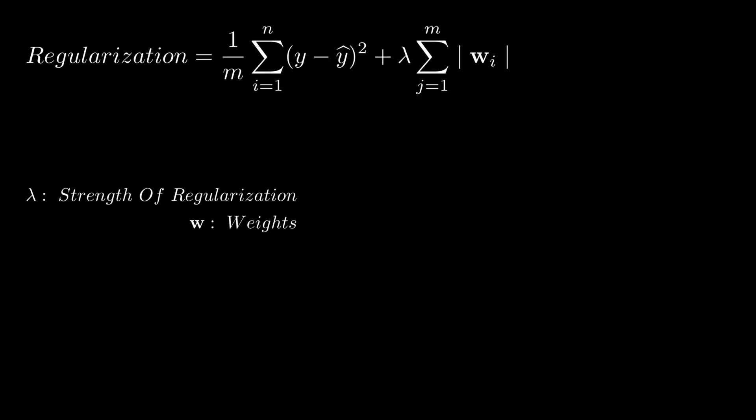Mean squared error is y true or ground truth values that we have given to our model during the training phase, minus the y predicted which is the predicted value by our model, the whole divided by m which is the total number of rows in the training data.